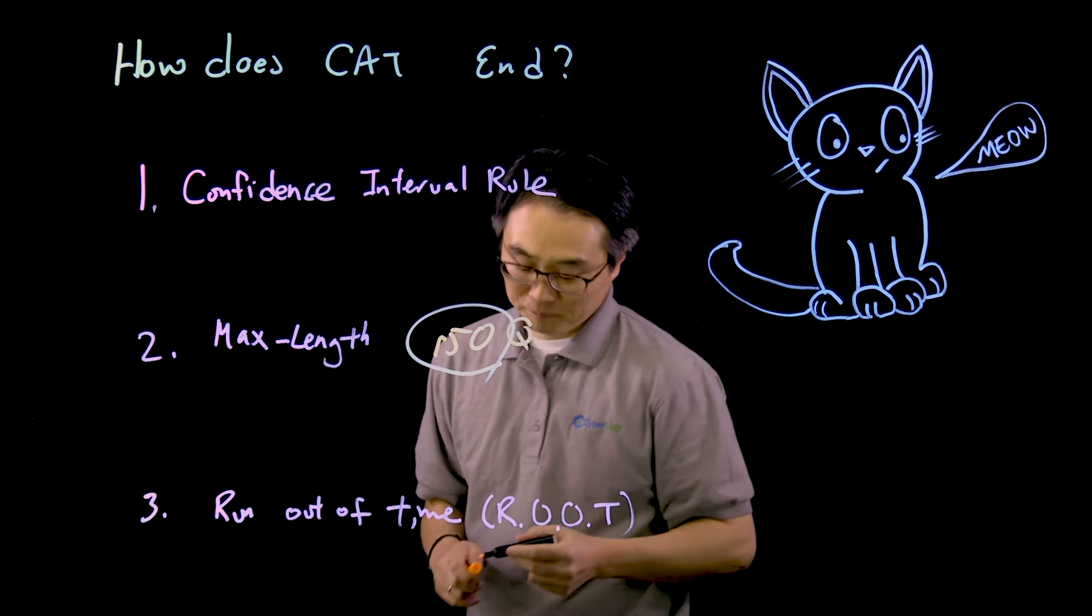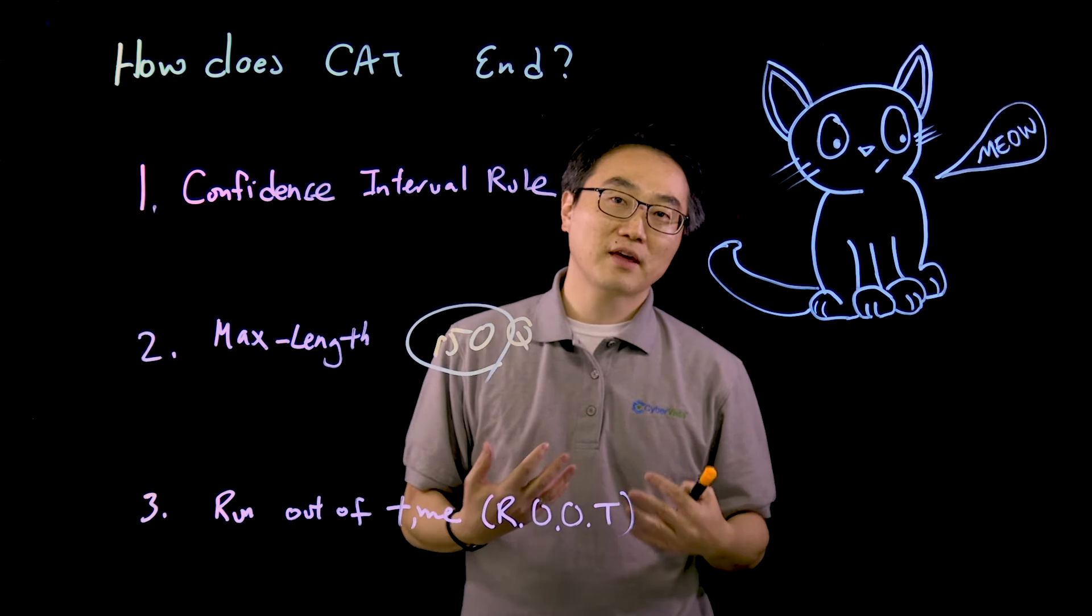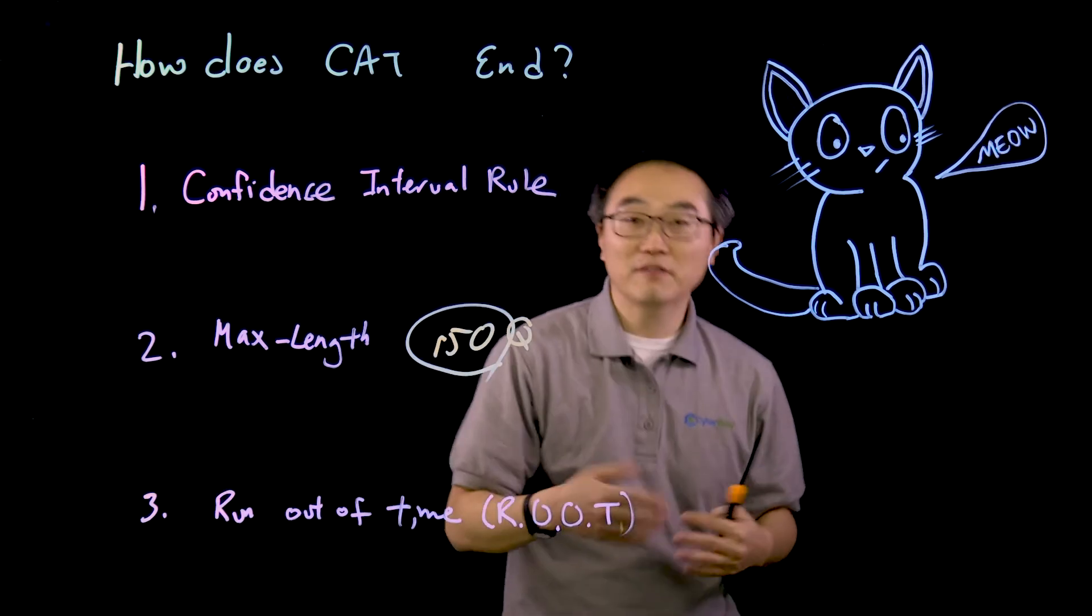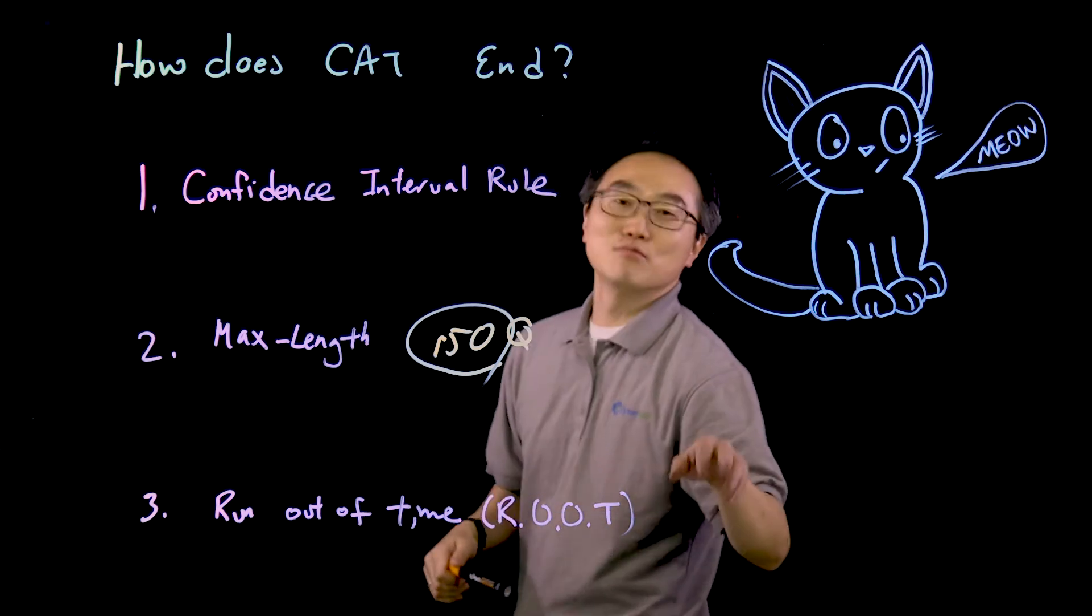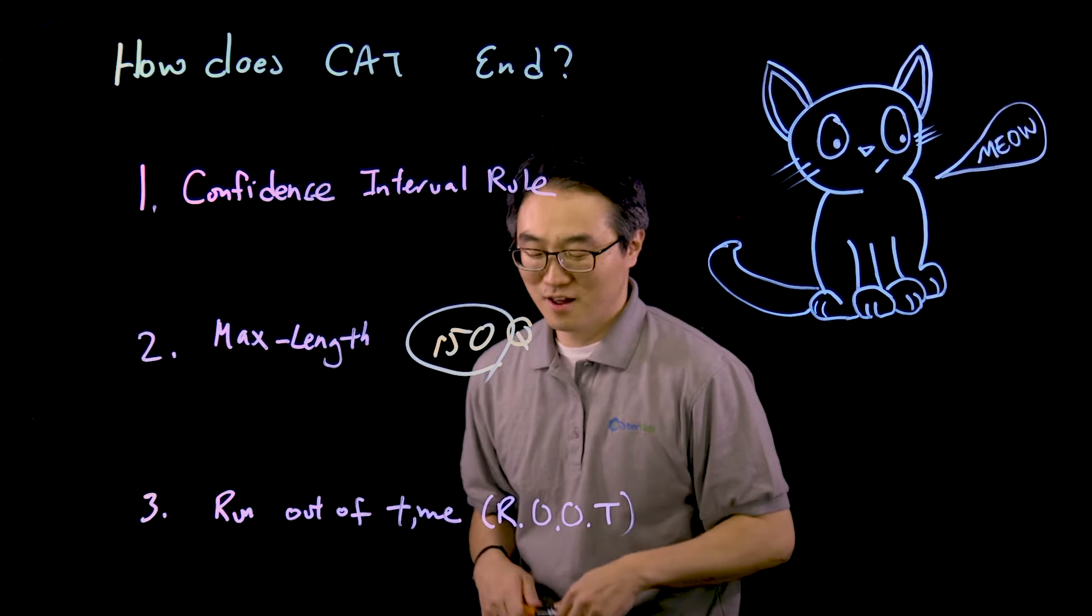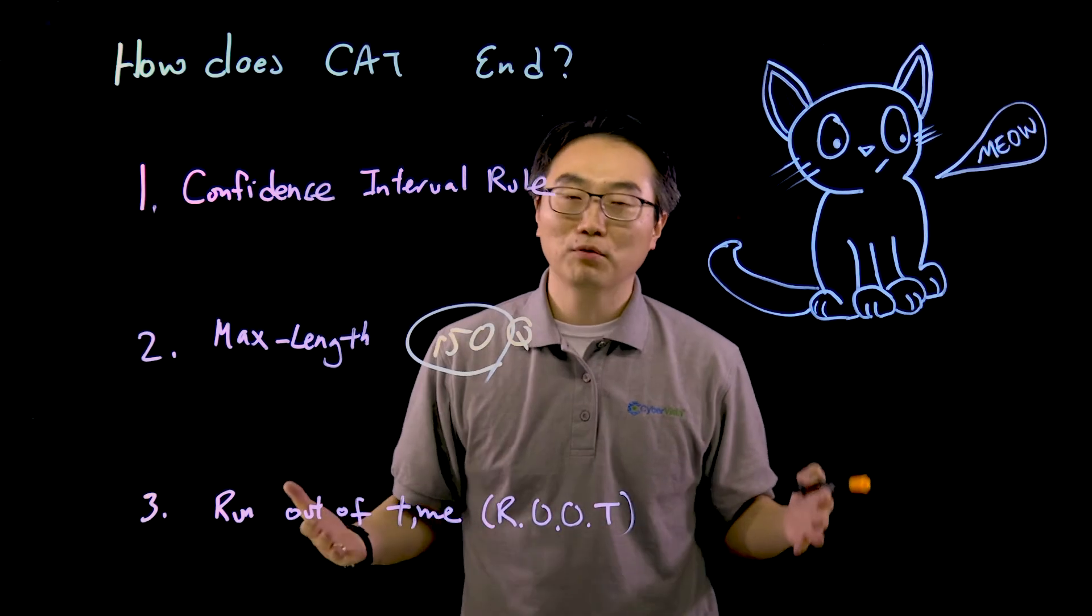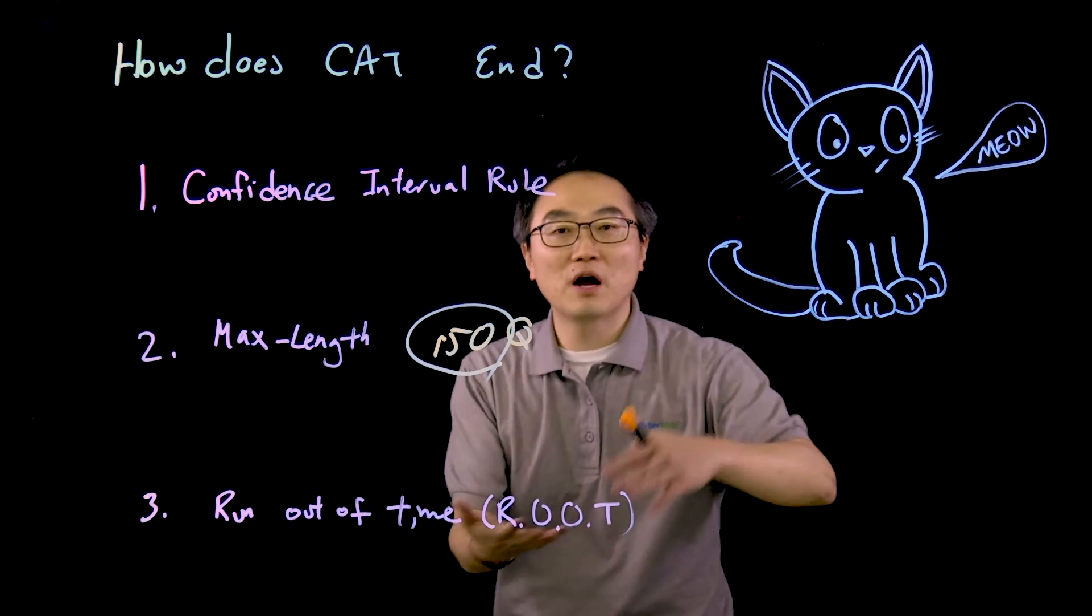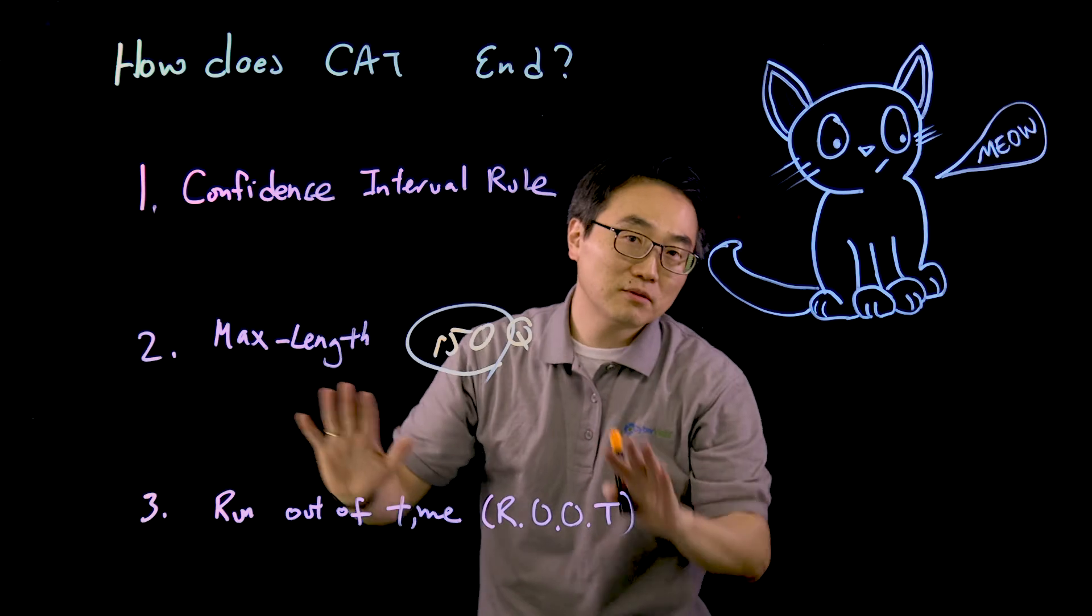As we talked about earlier, how long is a CAT exam? You actually could run out of time, which is—I love this acronym—Run Out Of Time Rule, otherwise known as ROOT Rule. You somehow ran out of time because you had three hours to finish this exam, and the computer couldn't figure out whether you will pass or fail based on either the Confidence Interval Rule or the Maximum Length Rule.